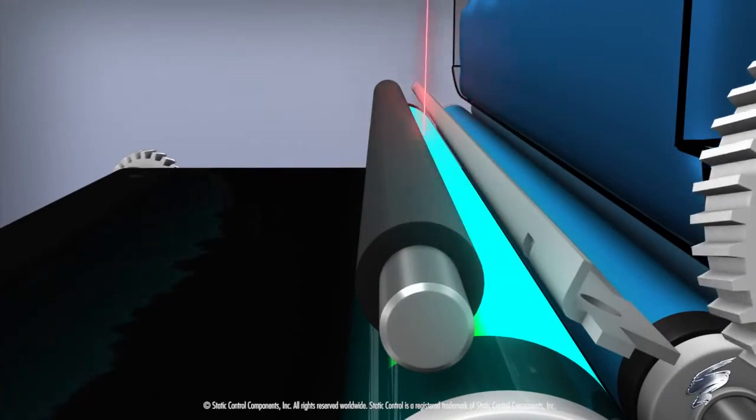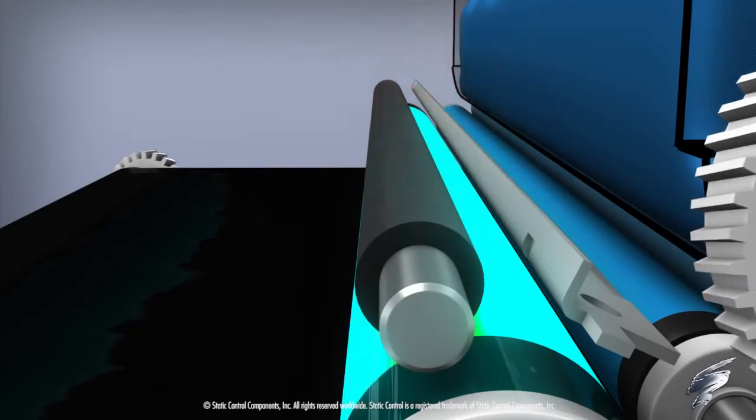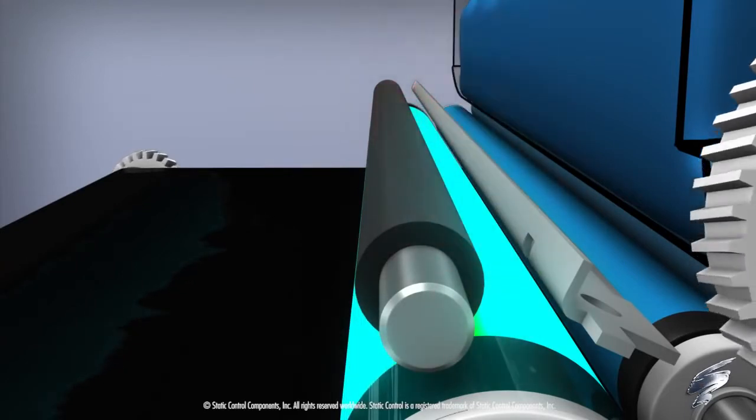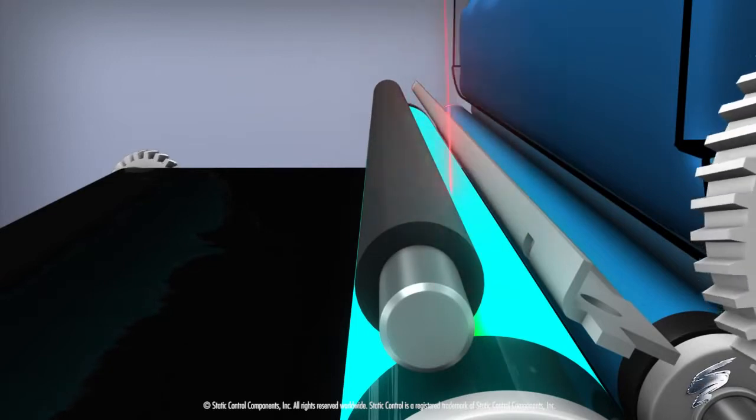The OPC drum is then exposed to a laser, which forms the image. This area is more positively charged than the areas not exposed to the image.